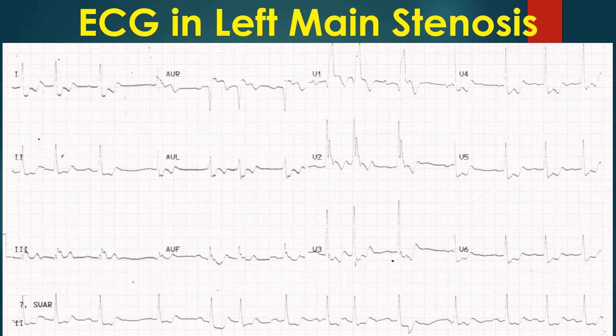In addition to ST elevation in AVR, this ECG also shows Q in V1 followed by a tall slurred R, called QRBBB, indicative of anterior wall infarction with right bundle branch block. The initial R of the RSR pattern expected in right bundle branch block is knocked off by the infarction. Multiple supraventricular ectopics are also seen in the ECG.